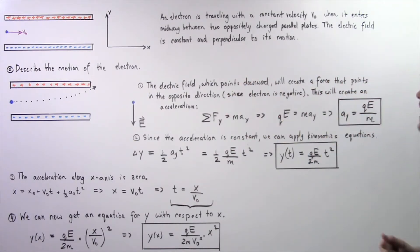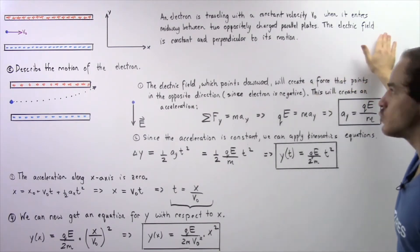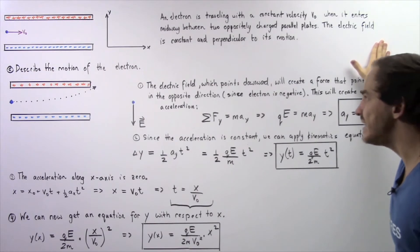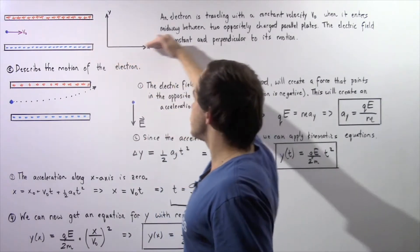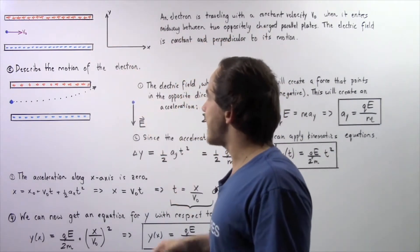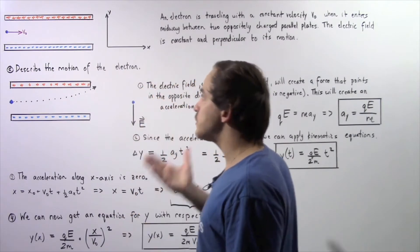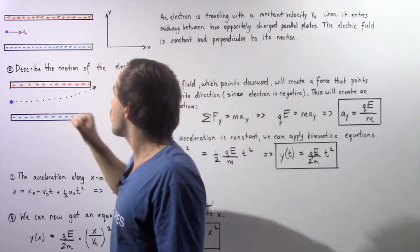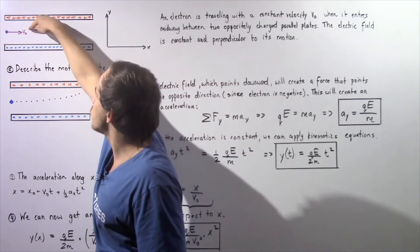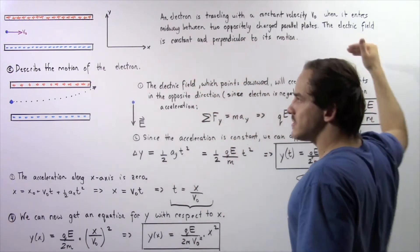An electron is traveling with a constant velocity given by V0 when it enters midway between two oppositely charged parallel plates. Assume the electric field is constant and points perpendicularly with respect to the motion of our electron. So let's suppose this is our x-axis and this is our y-axis. Our electron enters from the left side midway between the positively charged and the negatively charged parallel plates, beginning with a velocity V0 which is constant and points along the x-axis.